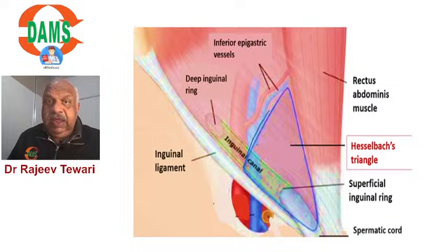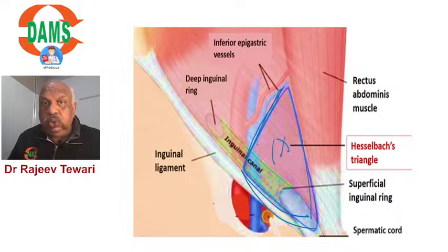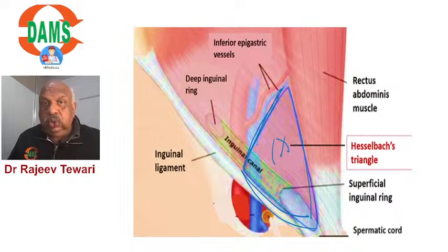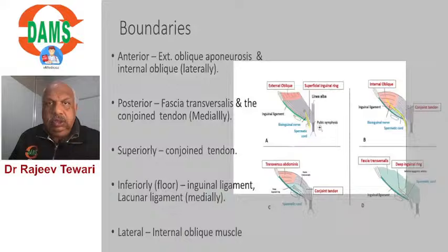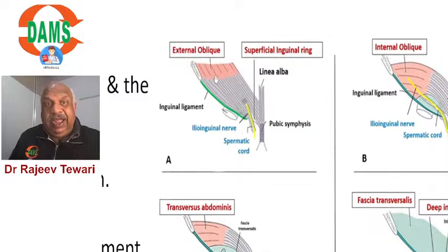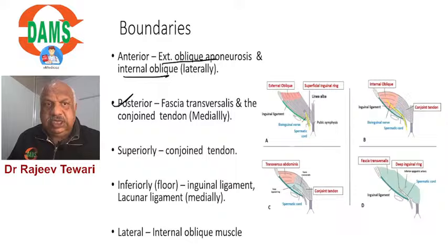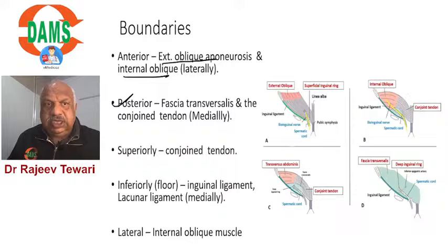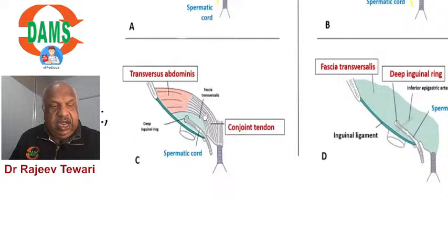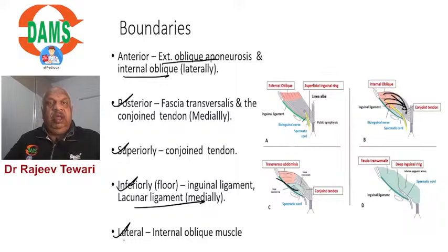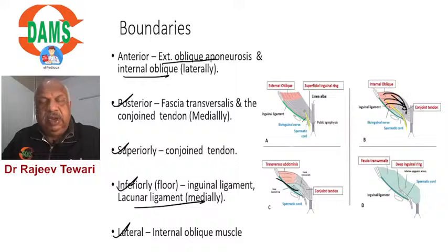This image from outside shows the external oblique forming the anterior wall and the external ring. You can see the ilioinguinal nerve coming out here — this is an important question. The most commonly injured nerve in open hernia surgery is the ilioinguinal nerve. The moment we cut the external oblique this nerve may get injured. This question is also asked as: after hernia surgery the patient complains of paraesthesia at the root of the penis or medial aspect of thigh — which nerve is injured? Answer: ilioinguinal nerve.